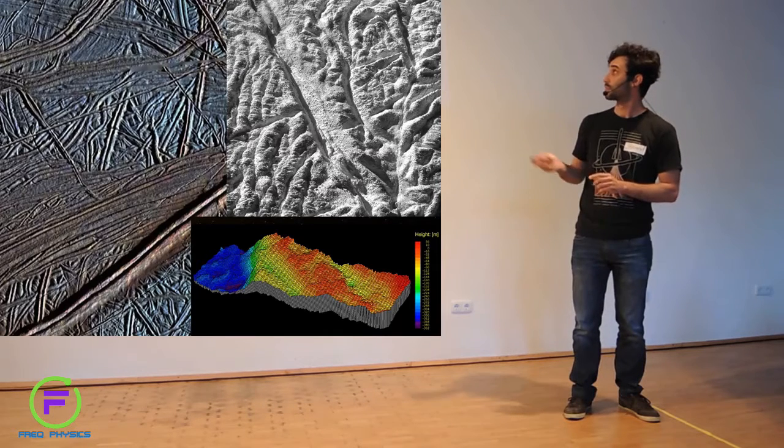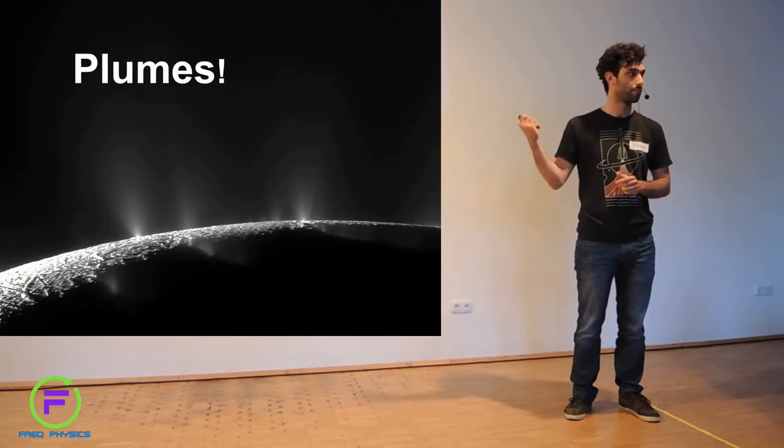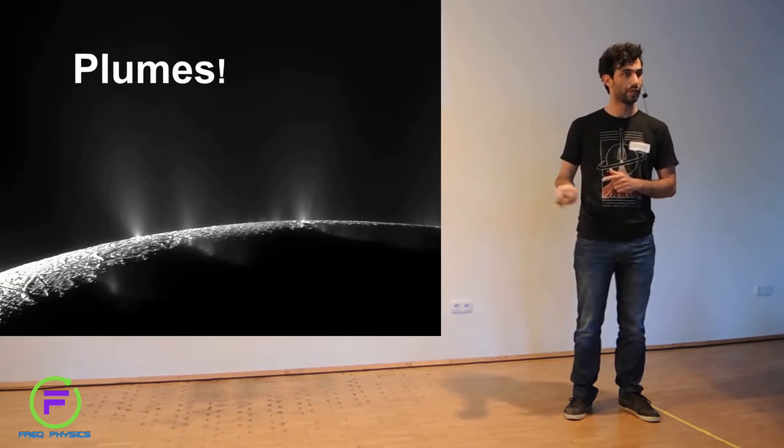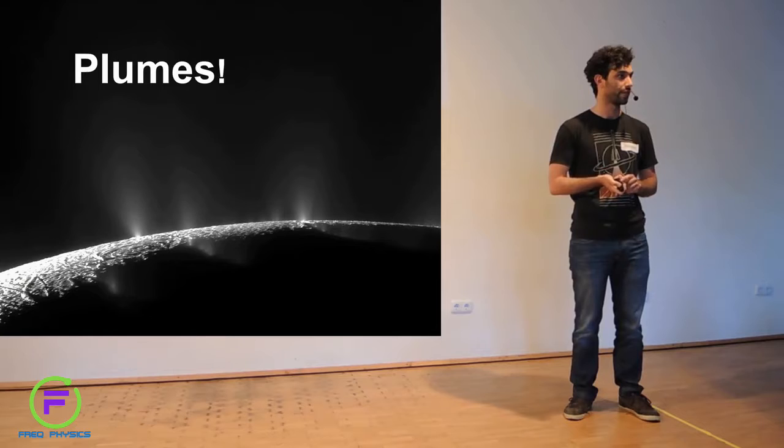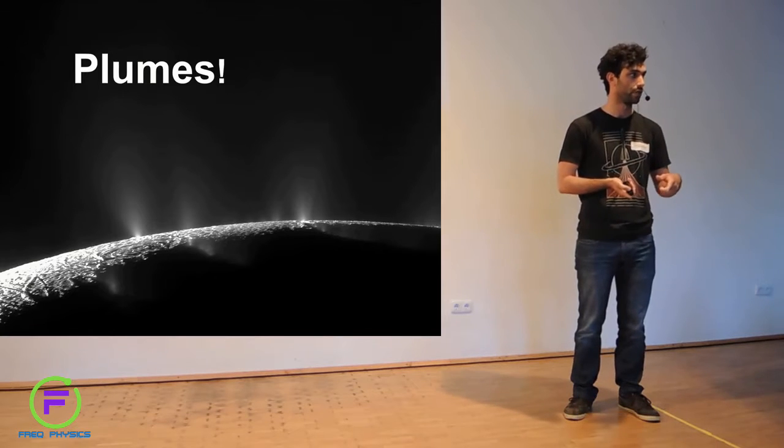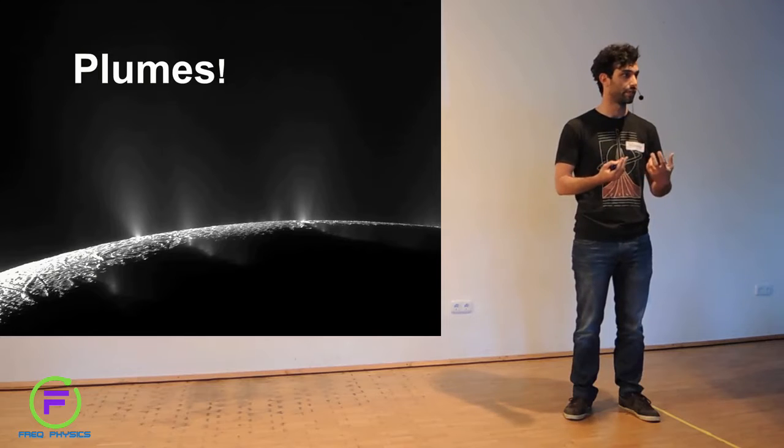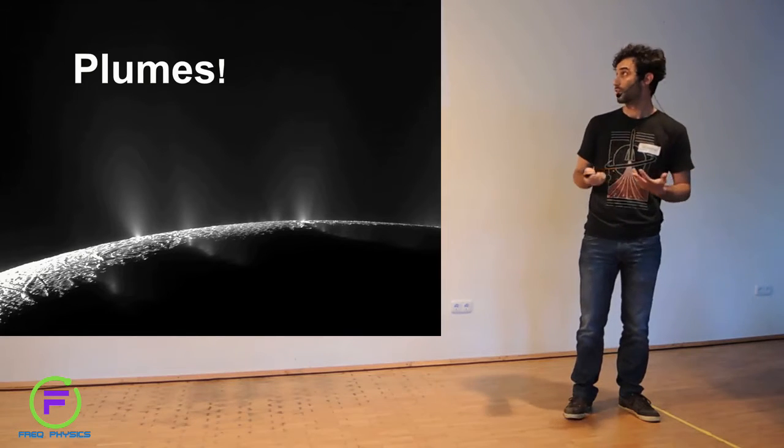And of course pictures of the plumes, very impressive, very dramatic. This was taken from Cassini around 2005, the Cassini spacecraft that is in orbit around Saturn. This shows that you have something active, an active ocean underneath. It's very impressive.